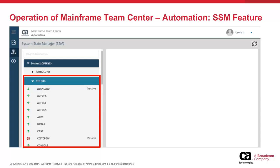The word to the right of the resource name indicates the effective mode of the resource. Absence of a word indicates that the effective mode is active. Effective mode is the resulting mode for the resource when SSM, table, and resource level modes are combined. Here, all shown resources have an effective mode of active except for ABAND-AID which is inactive and CCITCPGW which is passive.